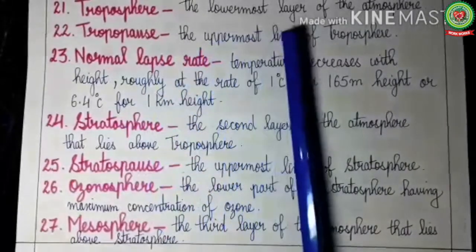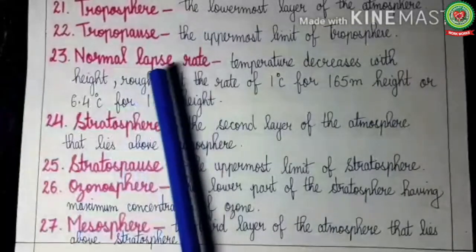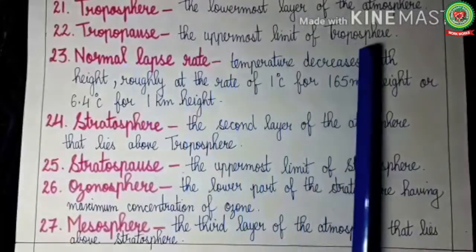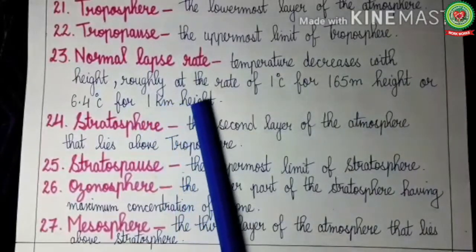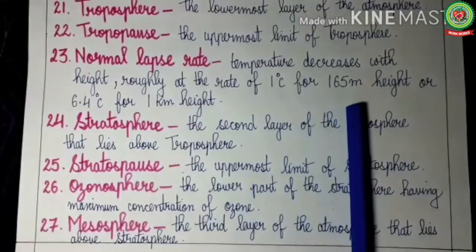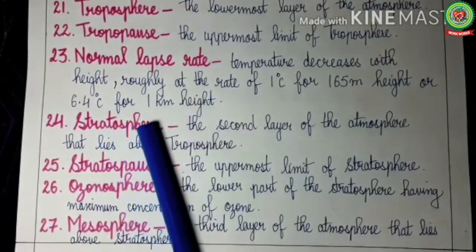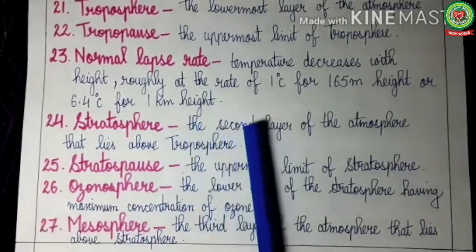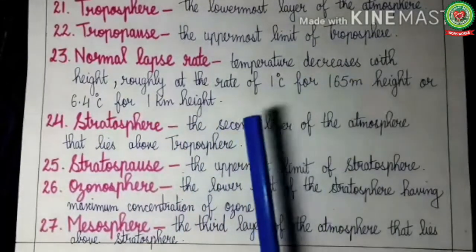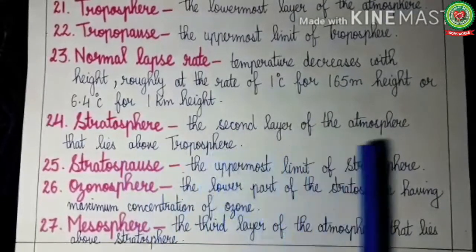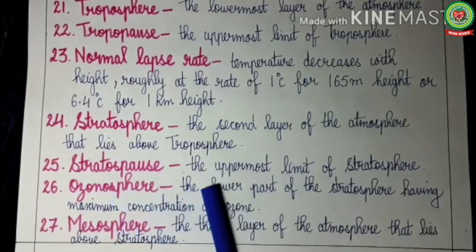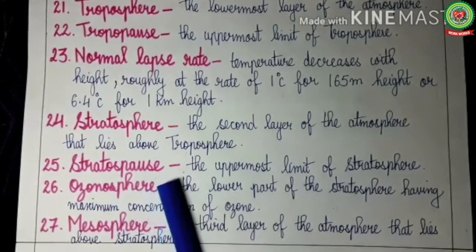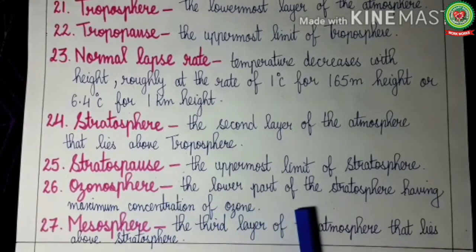Troposphere: the lowermost layer of the atmosphere, as seen in the diagram. Tropopause: the uppermost limit of the troposphere. Normal lapse rate: temperature decreases with height roughly at the rate of 1 degree Celsius for every 165 meters, or 6.4 degrees Celsius per kilometer. Stratosphere: the second layer of the atmosphere that lies above the troposphere. Stratopause: the uppermost limit of the stratosphere. Ozonosphere: the lower part of the stratosphere having maximum concentration of ozone gas.